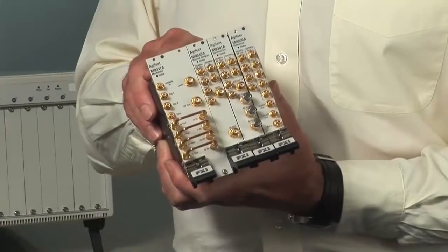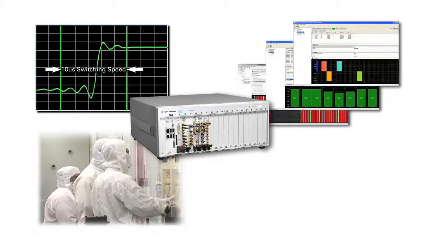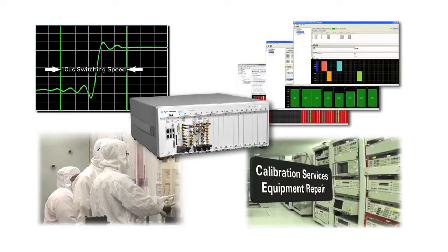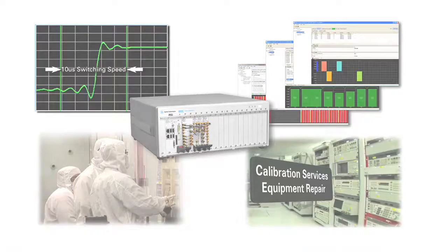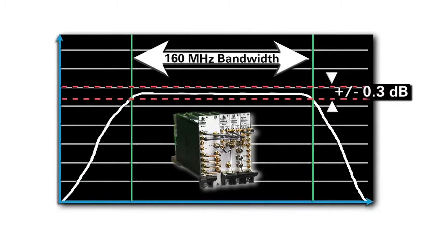The Agilent Vector Signal Generator in PXI incorporates proprietary Agilent measurement technology in a number of significant areas. First, we've added a whole new calibration scheme which delivers outstanding amplitude accuracy across the full 160 megahertz band.